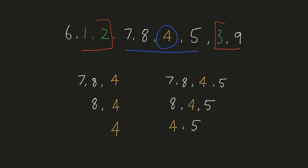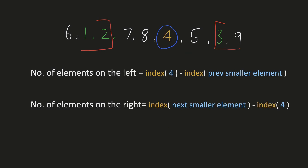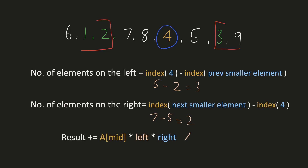For each of these 6 sub-arrays, 4 is the minimum and we would add it to our result. We can come up with the count of sub-arrays by multiplying the number of elements on the left with the number of elements on the right. The number of elements on the left would be the index of 4 minus the index of the previous smaller element. The number on the right would be the index of the next smaller element minus the index of 4. To find the next or previous smaller element, we can use an increasing monotonic stack. I recently uploaded a video on the hard problem 'Next Greater Element IV' explaining how to find the next greater element using a monotonic stack — I'd advise you to check that out if you haven't used monotonic stacks before.